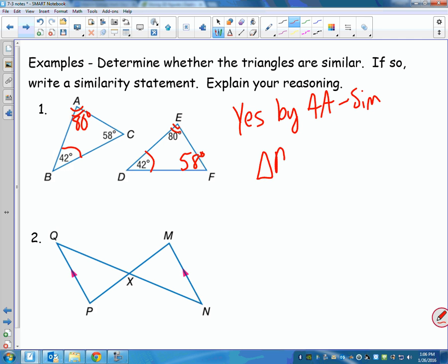And then you have to say the similarity statement. It doesn't matter which letters you start with in one triangle as long as they match up. So if I say triangle ABC, what do we have to say for the other one? DEF. Because 80, 42, 58, you have to go in the same order. If you do not go in the same order, that is wrong.